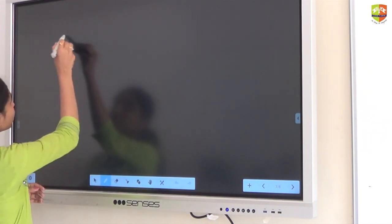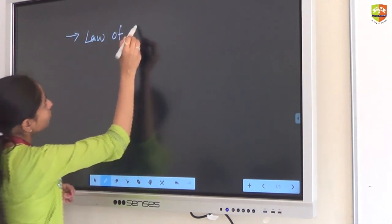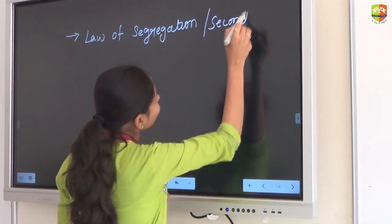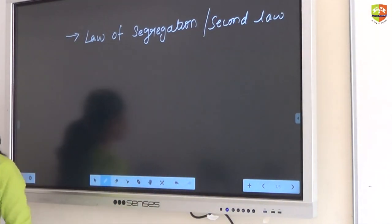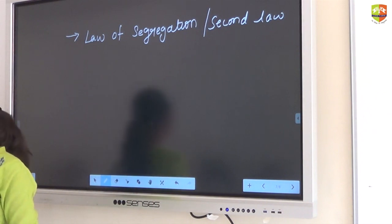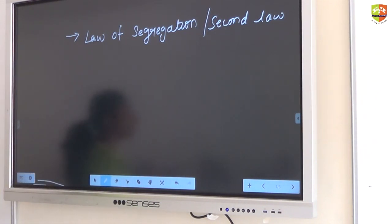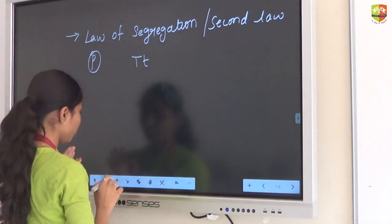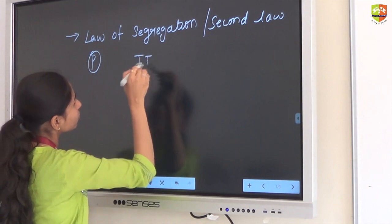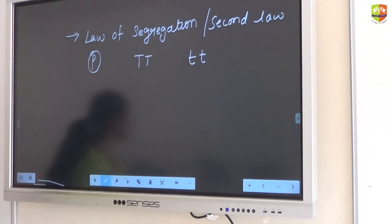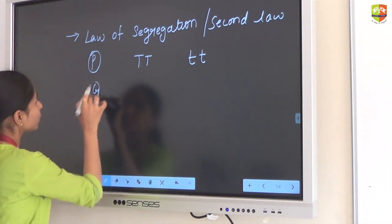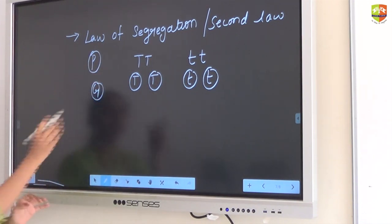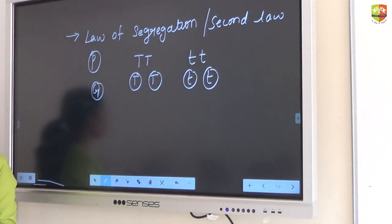The next law is the law of segregation, or Mendel's second law. This can be explained with the help of a cross only. We start with pure lines. Here we have two alleles. Each allele has its own purity. Either this allele can express or the other allele can express. Both will have purity of gametes.